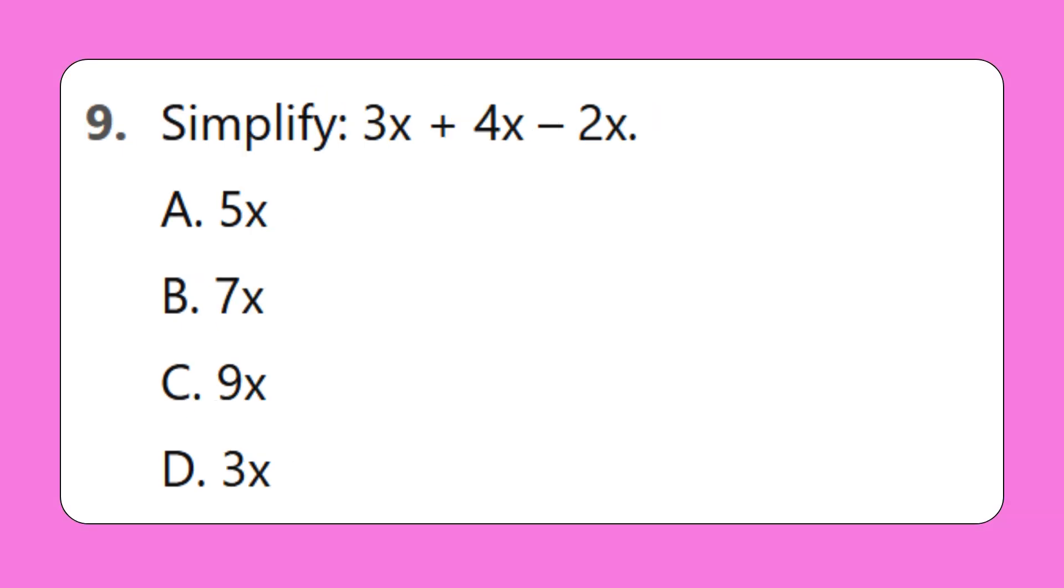9. Simplify 3x + 4x - 2x. A. 5x, B. 7x, C. 9x, D. 3x.